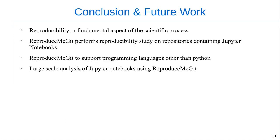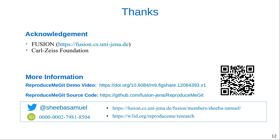Reproducibility is a fundamental aspect of the scientific process. ReproduceMeGit is developed to help in supporting reproducibility of computational notebooks. We plan to extend ReproduceMeGit to support programming languages other than Python, and we also plan to conduct a large-scale analysis of Jupyter notebooks using ReproduceMeGit. Finally, I would like to acknowledge Fusion, our team at the University of Vienna, and Carl Zeiss Foundation for the funding of this work. You can find more information on this research at the links shown. Thank you.